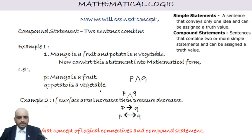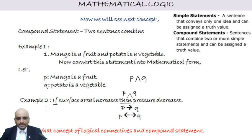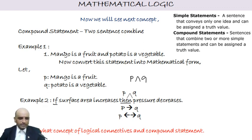Another example: 'If surface area increases then pressure decreases.' Here we let P represent 'surface area increases' and Q represent 'pressure decreases.' In mathematical form this is written as P → Q, using the single-direction arrow for 'if then.' This is a conditional statement.